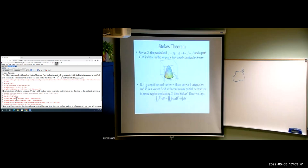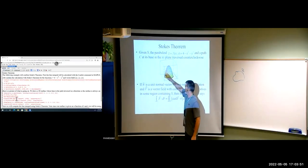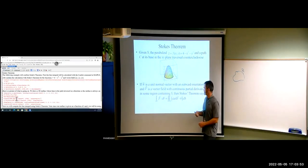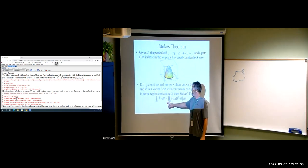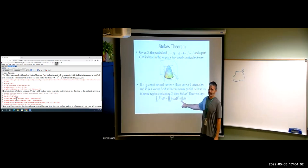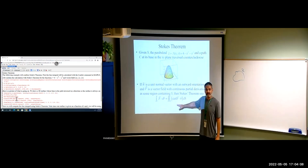Well, what Stokes' Theorem says is if we have N, which is a unit normal vector with an outward orientation, pointing outward on the surface, and we have some vector field with continuous partial derivatives, then Stokes' Theorem says the line integral can be done as the double integral of the curl dotted with that normal vector over S.